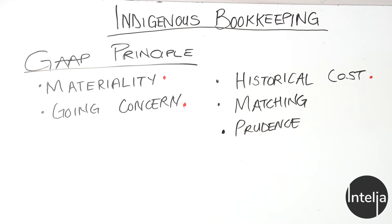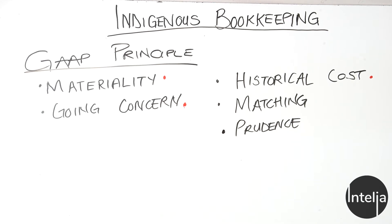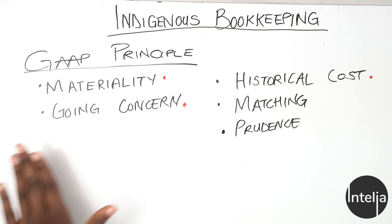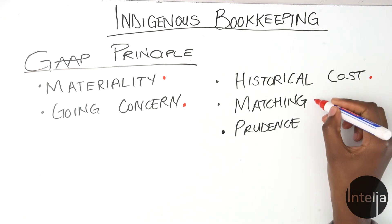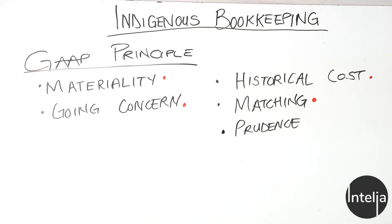The next one is going concern. This says that we should always prepare the financial statements of a business under the assumption that it is a going concern — that it will continue to operate for the foreseeable future. You can't just assume the business is closing next year. You must create the financial statements in such a way that shows the business is a going concern.